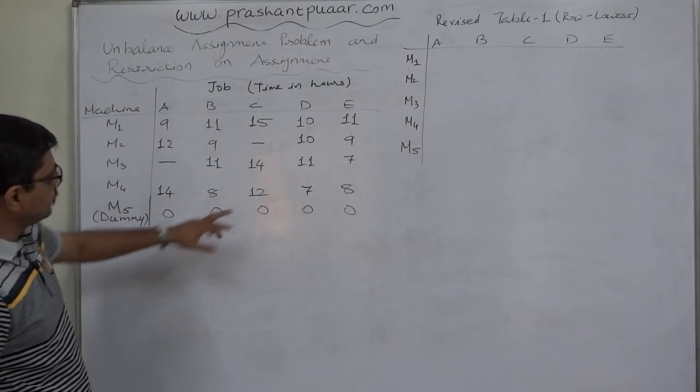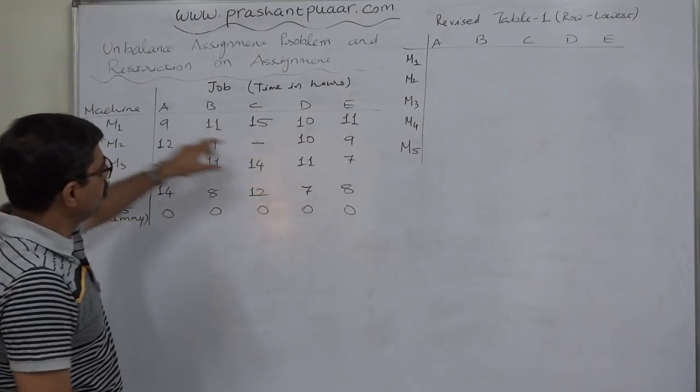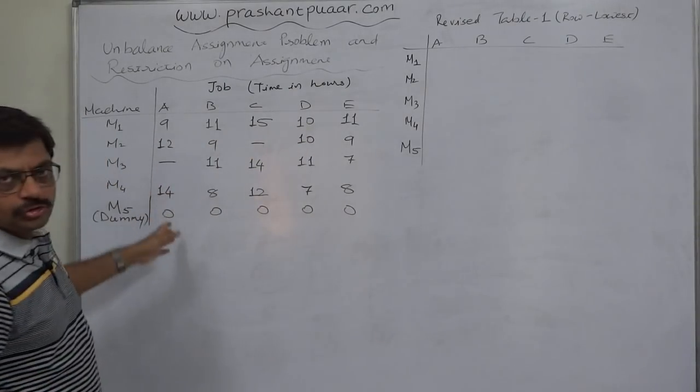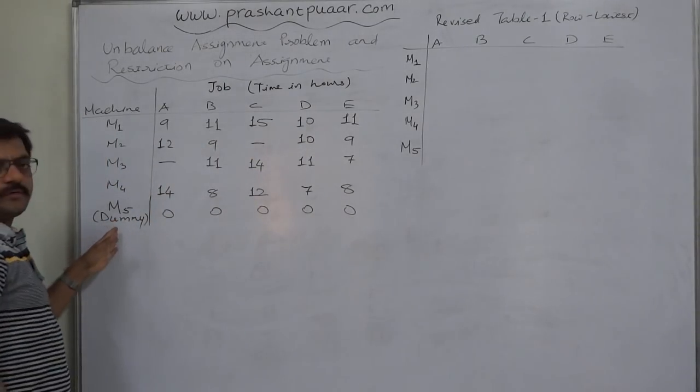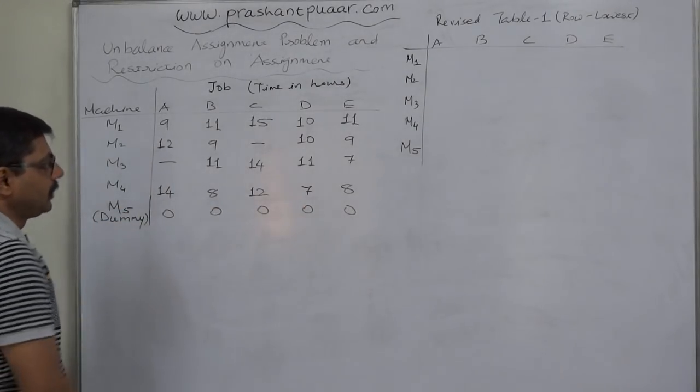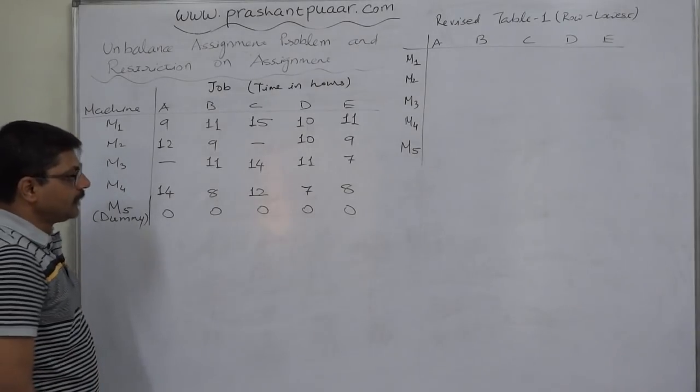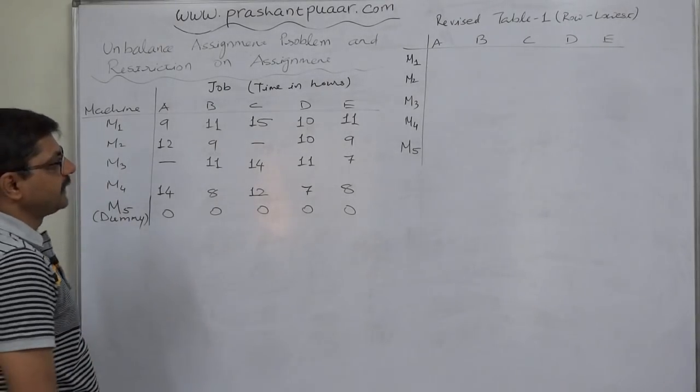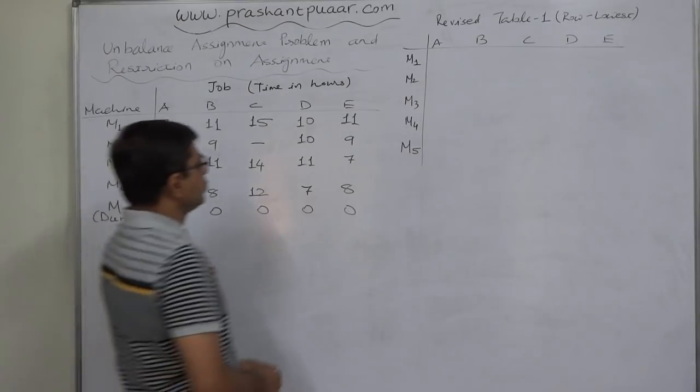First, we have to subtract smallest value from all the rows. And fortunately, by virtue of this dummy row, we have single zeros in all columns. So we will not require step 2. But we have to perform step 1. That is, row minus lowest.